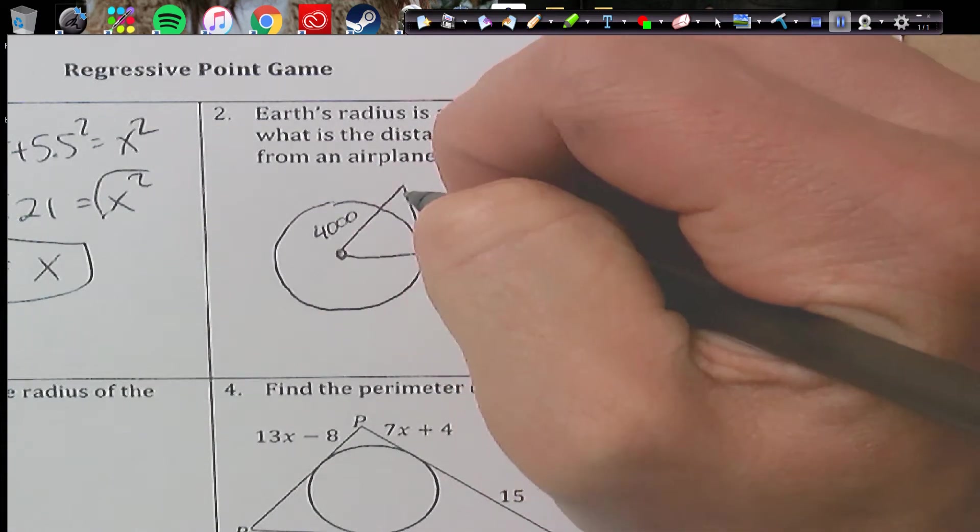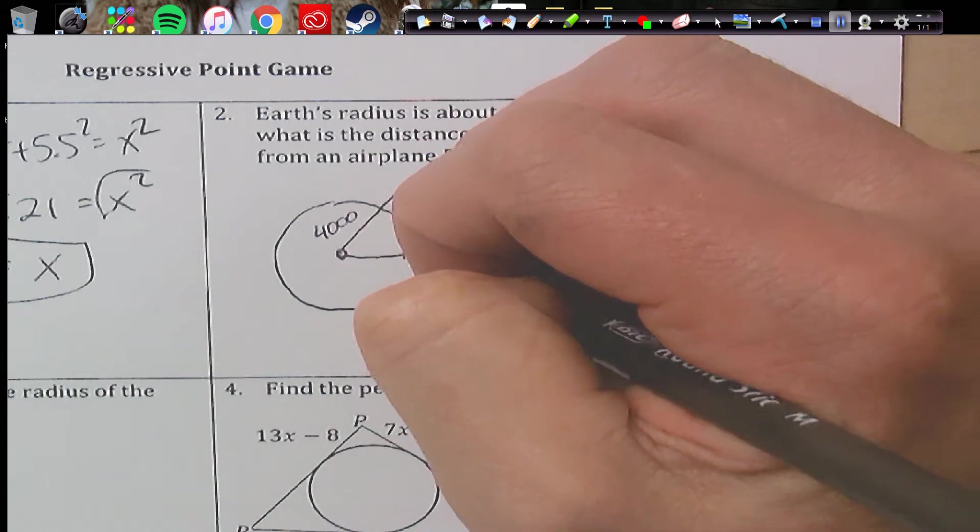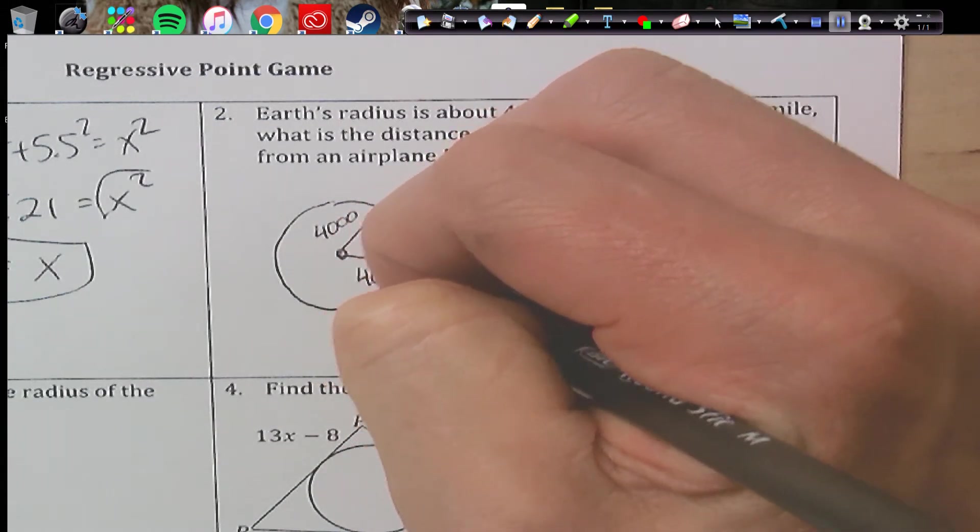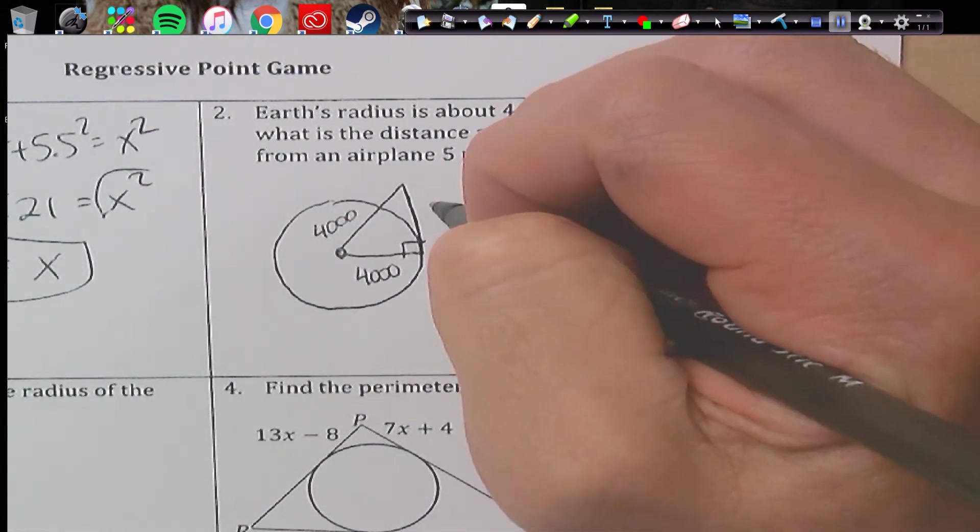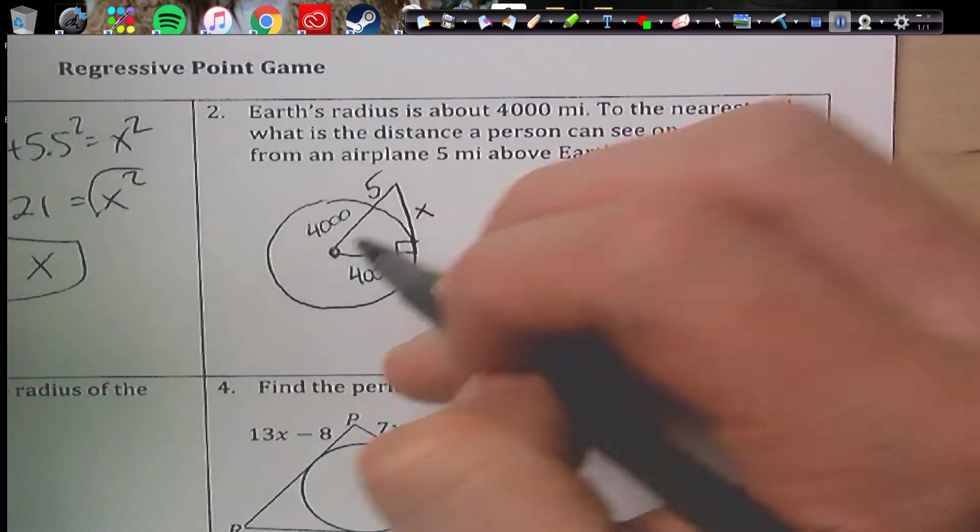Now this right here is a tangent line because it's going through the horizon. So it's going to create a 90 degree here. So this is also 4,000. The distance I can see, I don't know. And I'm 5 miles up in the air. So we're going to use Pythagorean theorem here.